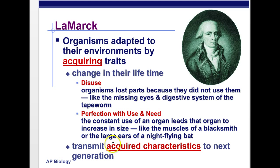Lamarck, who actually lived before Darwin's time, believed that organisms changed — that they weren't just static. But unlike what we know today, he believed that organisms could actually change in their own lifetime from the use of certain parts. For example, a giraffe who constantly stretched its neck into the trees to get food would actually grow a longer neck and then be able to pass that longer neck on to their offspring. Those would be called acquired characteristics or acquired traits.